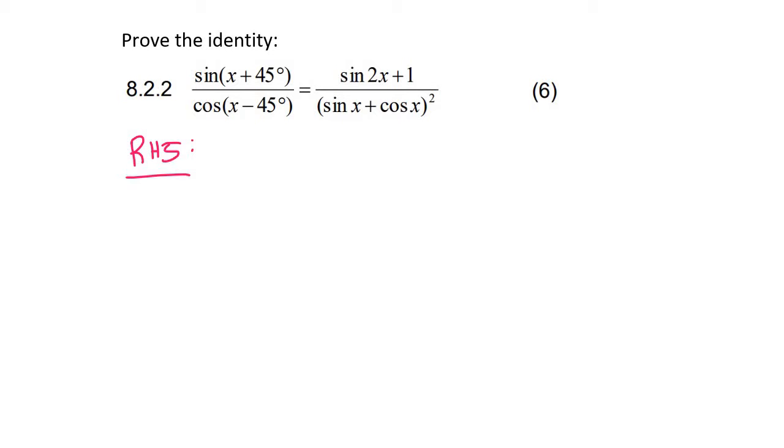Usually what we do when we have sin 2x, we always want to use the double angle for that one. From our formula sheet we know that's going to expand, and so that's going to give us 2 sin x cos x plus 1.